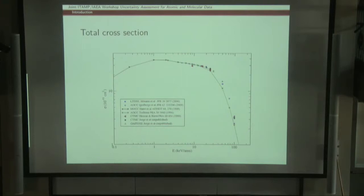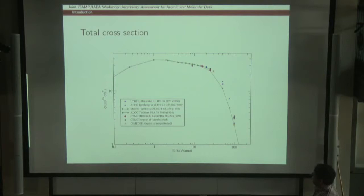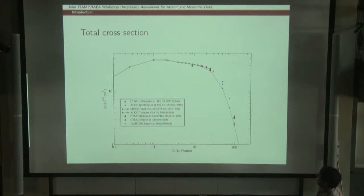Turning now to the current situation, there are many calculations. I extracted a few of them to produce this graph, and I have probably forgotten some. There are molecular calculations and atomic calculations. I chose a couple of them: those from Igenberg, the most recent one, and the calculation by Itoshima which is a classic one. I also used the molecular calculations of ADL and co-workers, and a couple of CTMC calculations.